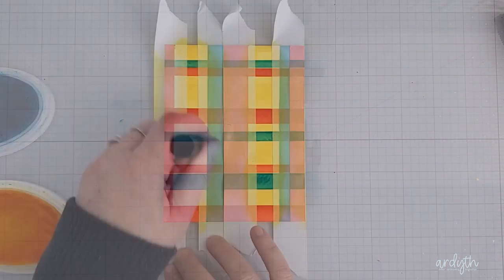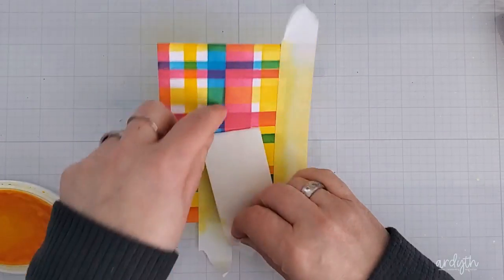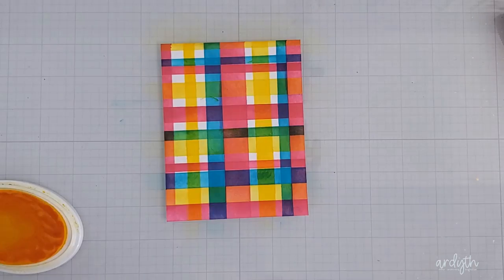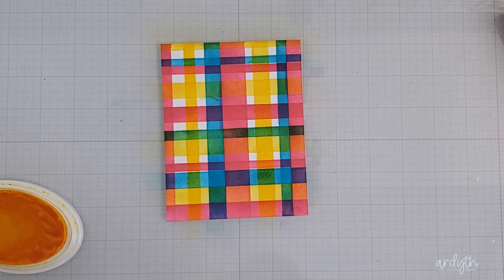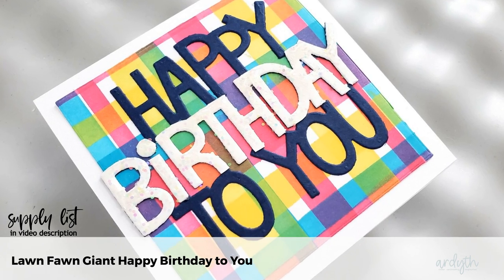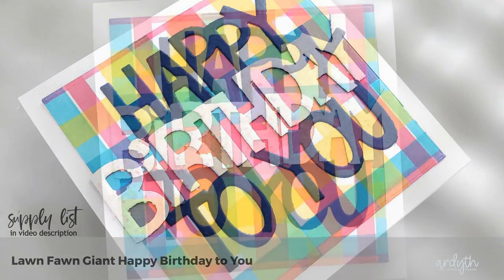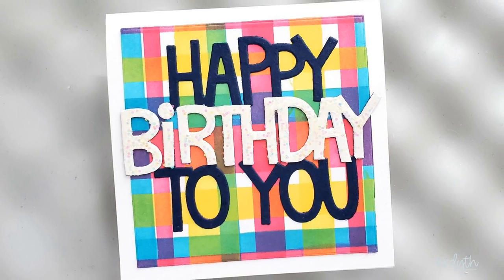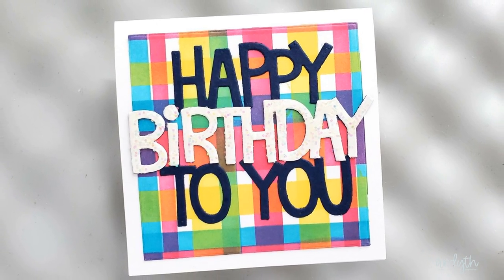Again, you could choose any colors you want here, or even just one or two colors for a different look, but using primary colors is always going to give you a rainbow where they mix, which is fun. This one's got a simple Lawn Fawn die cut in navy blue, and to jazz it up a little bit I added a white layer just to the birthday word along with some Nuvo Crystal Glaze and chunky glitter.